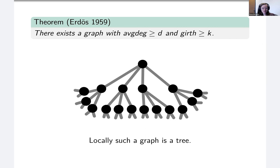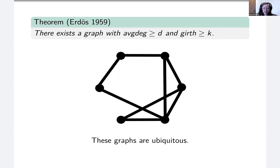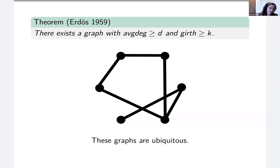There's a random construction for creating these graphs. You can begin with a big clique and then for every edge flip a coin — if it's heads, keep the edge; if it's tails, delete the edge. If you do this, you're going to end up not getting too many triangles in the graph, and in general not many short cycles. If you then delete an edge from each of those short cycles, you get a graph that by construction has high girth and with high probability will have large average degree.